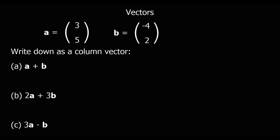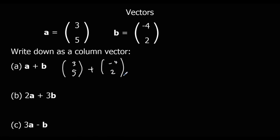Now a different type of question. Vector a is the movement three along, five up. Vector b is the movement four left, two up. We can add or subtract vectors by adding along the columns. The first one says a plus b, so we're going to do the column vector three, five plus minus four, two. We can look at the x direction first.